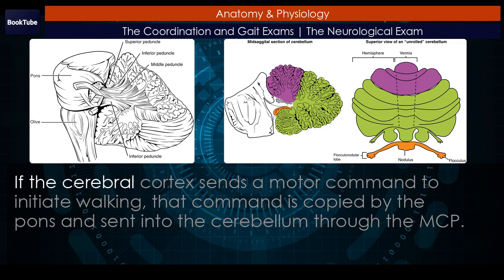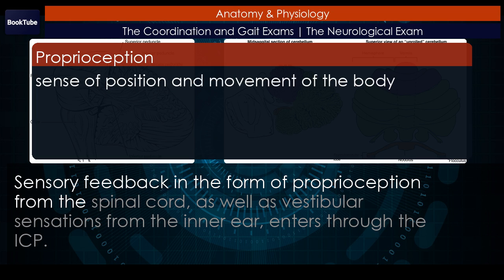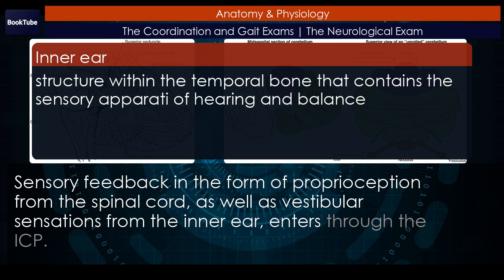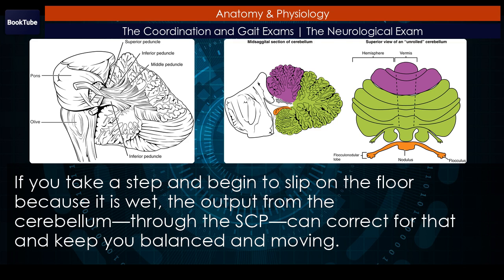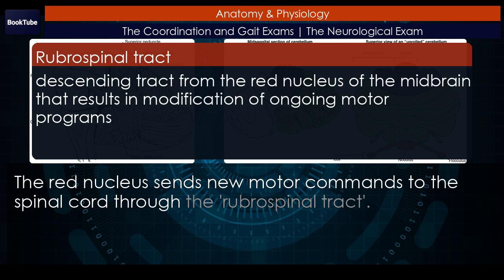If the cerebral cortex sends a motor command to initiate walking, that command is copied by the pons and sent into the cerebellum through the MCP. Sensory feedback in the form of proprioception from the spinal cord, as well as vestibular sensations from the inner ear, enters through the ICP. If you take a step and begin to slip on the floor because it is wet, the output from the cerebellum through the SCP can correct for that and keep you balanced and moving. The red nucleus sends new motor commands to the spinal cord through the rubrospinal tract.